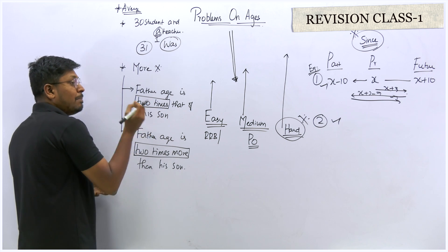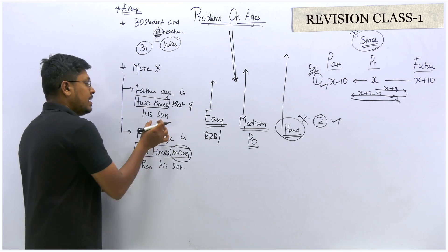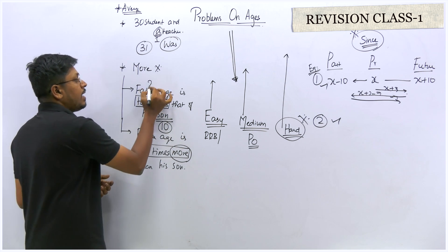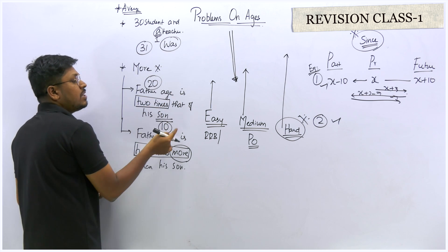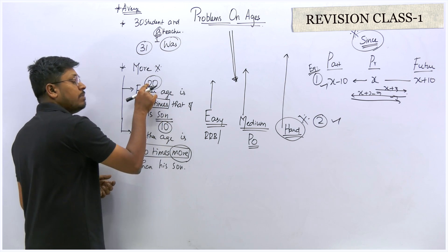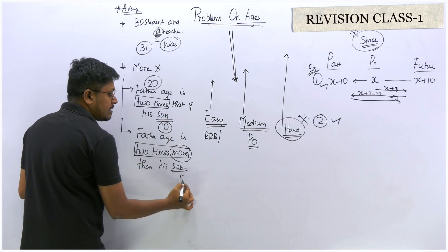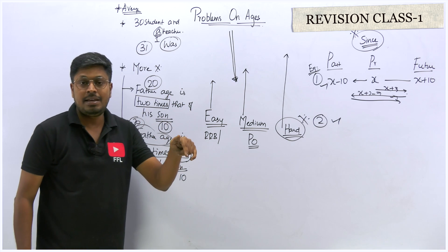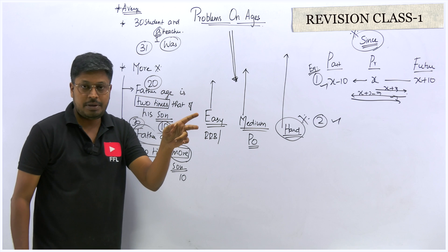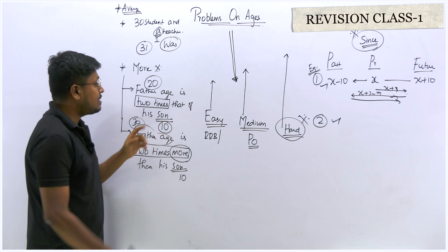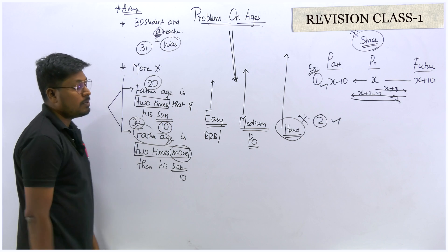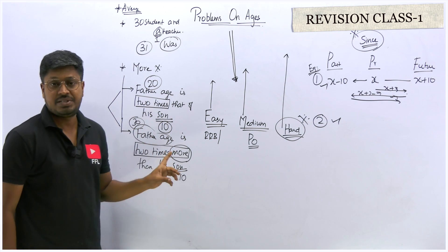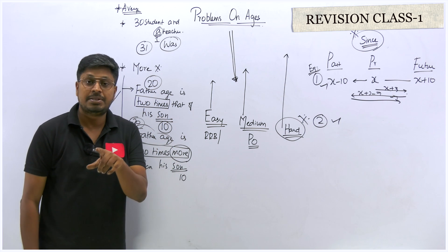Let's say son's age is 10. In the first case — 'father's age is two times the son's age' — the father's age will be 20. But in the second case — 'father's age is two times more than the son's age' — the father's age will be 30, not 20. Why? Because 'two times more' means two times (which is 20) plus 10 more, so 30. This is the concept I taught in my video on the twice/thrice concept.